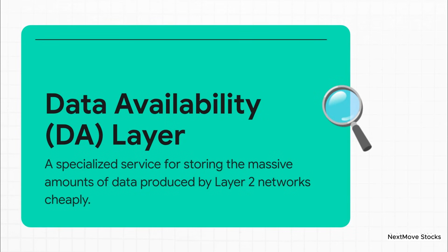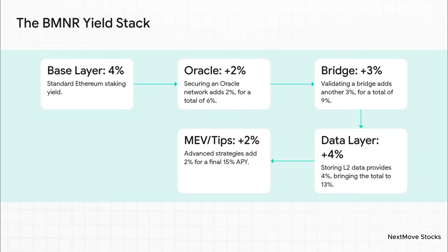Our fourth layer is the data availability, or DA layer. All those other networks create a tidal wave of transaction data, and storing all of that on the main blockchain is super expensive. So they use a DA layer as a kind of cheap, temporary hard drive. An operator that already has high-density storage infrastructure is in a perfect position to offer this service. Let's say the yield for providing that data storage is a healthy 4%. So let's put this all together: 4% from the base layer, add 2 from the Oracle — that's 6, add 3 from the bridge — we're at 9, add 4 from the data layer — now we're at 13. Factor in other network rewards that can realistically add another 2%, and there you have it: a 4% yield has been transformed into a 15% yield machine.